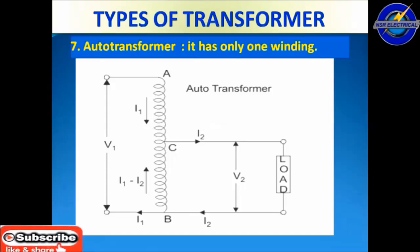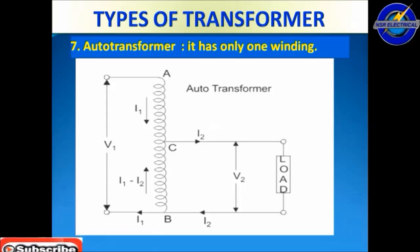The seventh type is the auto transformer. It has only one winding. We give the input voltage to the A and B points and we take the output voltage from the C and B points.